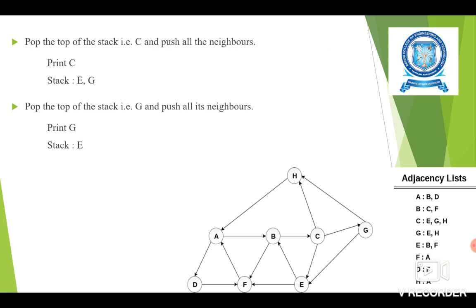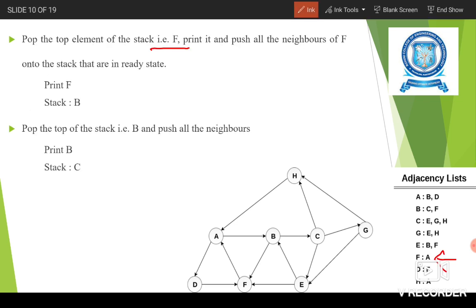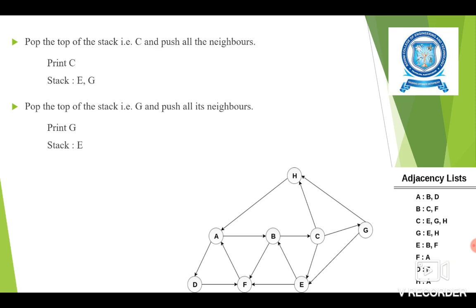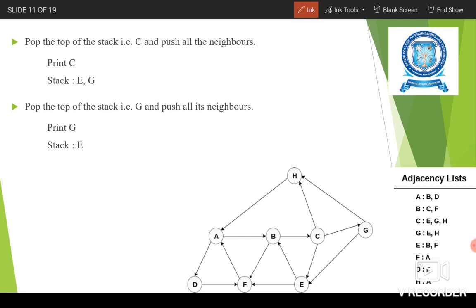Since A is processed, we do not push it into the stack. Now the stack contains only B, so B is popped and printed. The neighbors of B are C and F — F is already printed and processed — so only C is pushed onto the stack. The stack now contains C. We pop C and print it. The neighbors of C are E, G, and H. H is our initial node and already processed, so the unprocessed nodes E and G are pushed onto the stack.